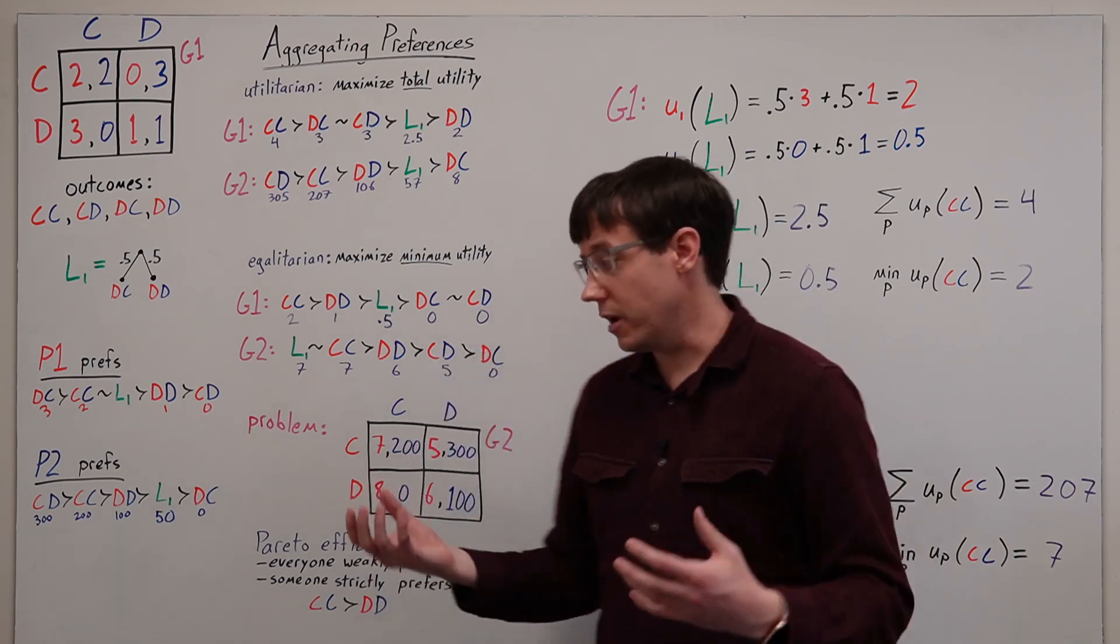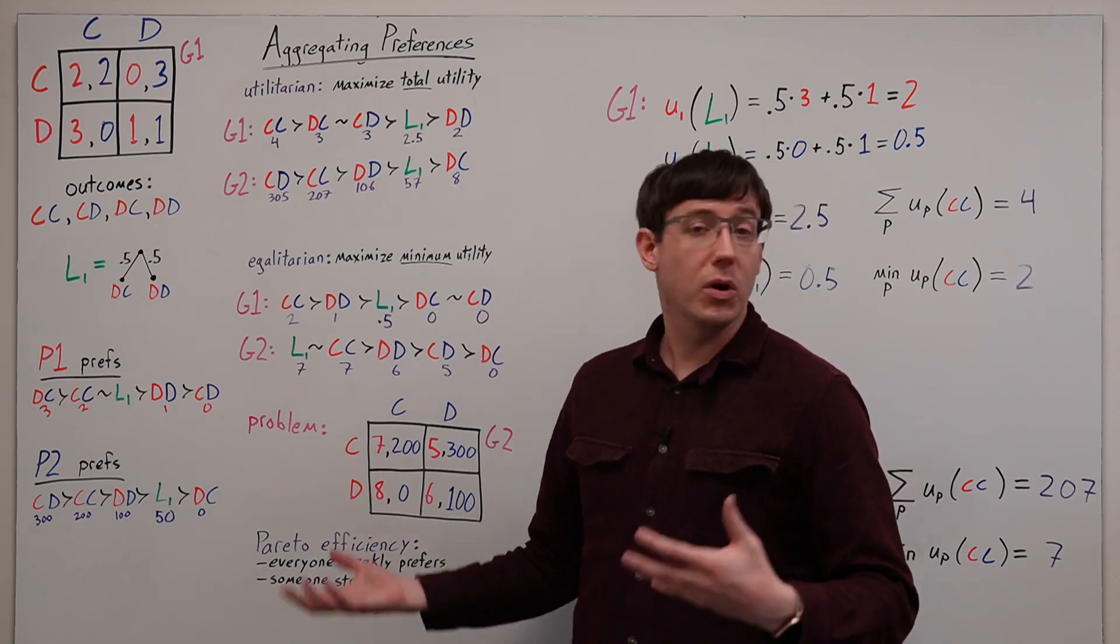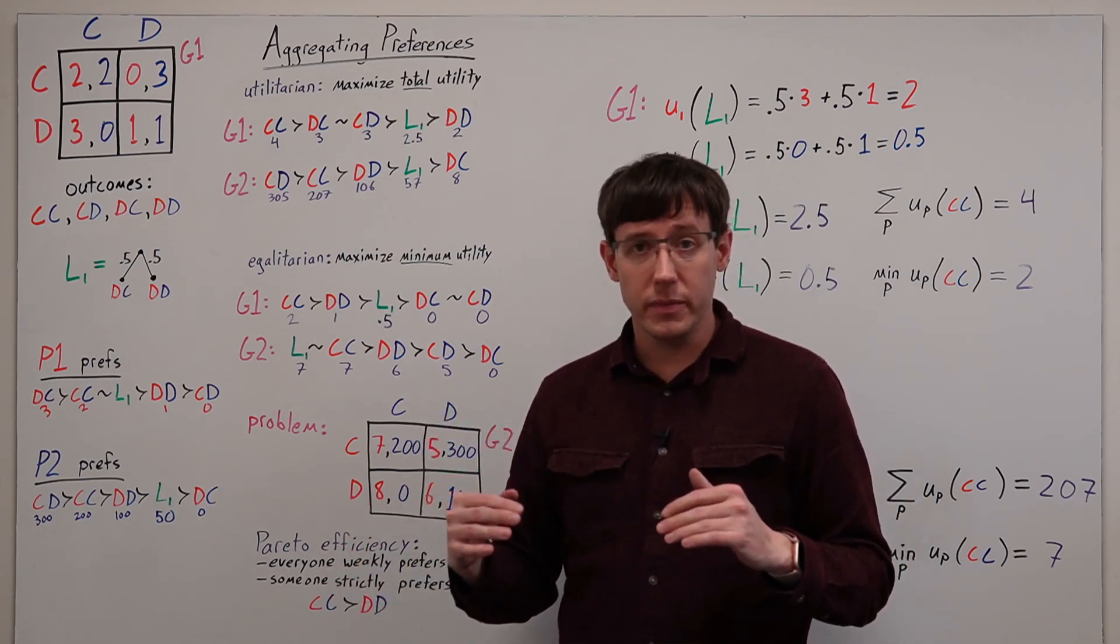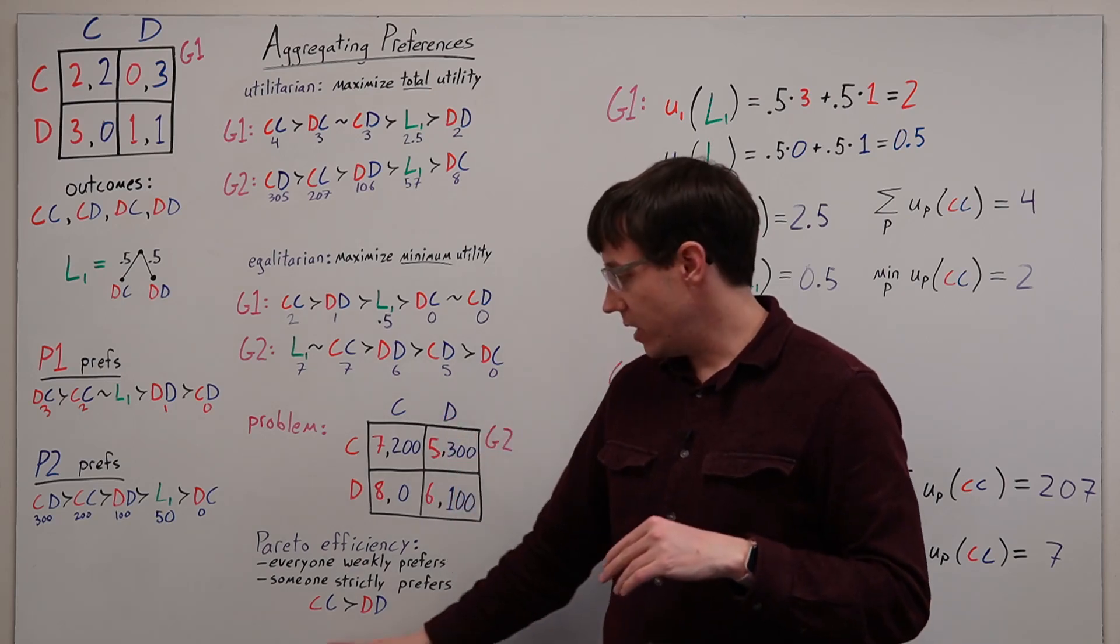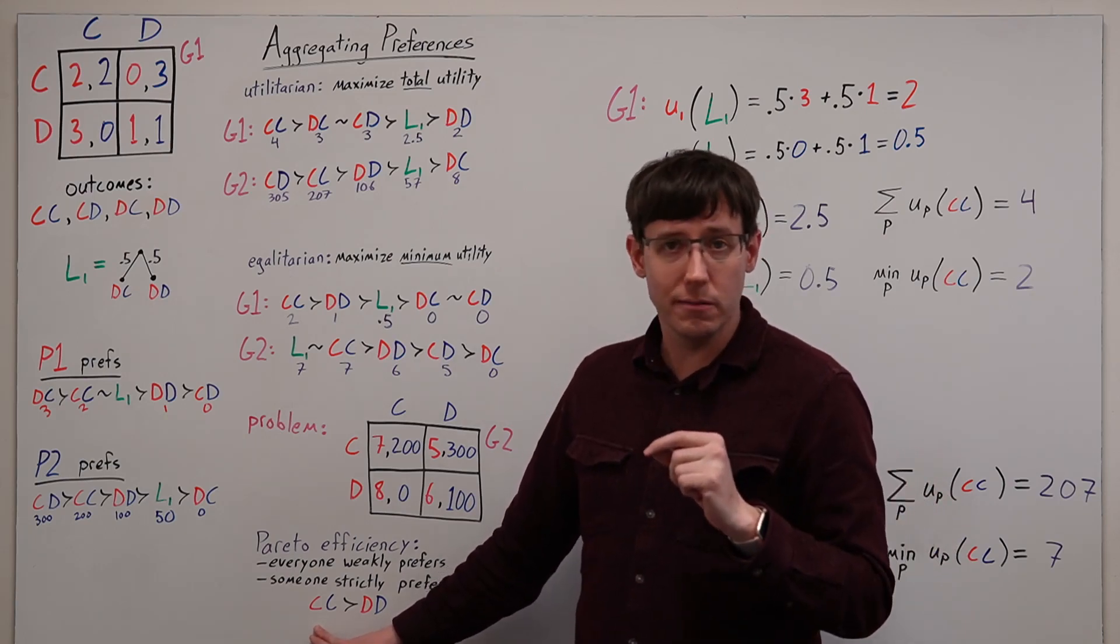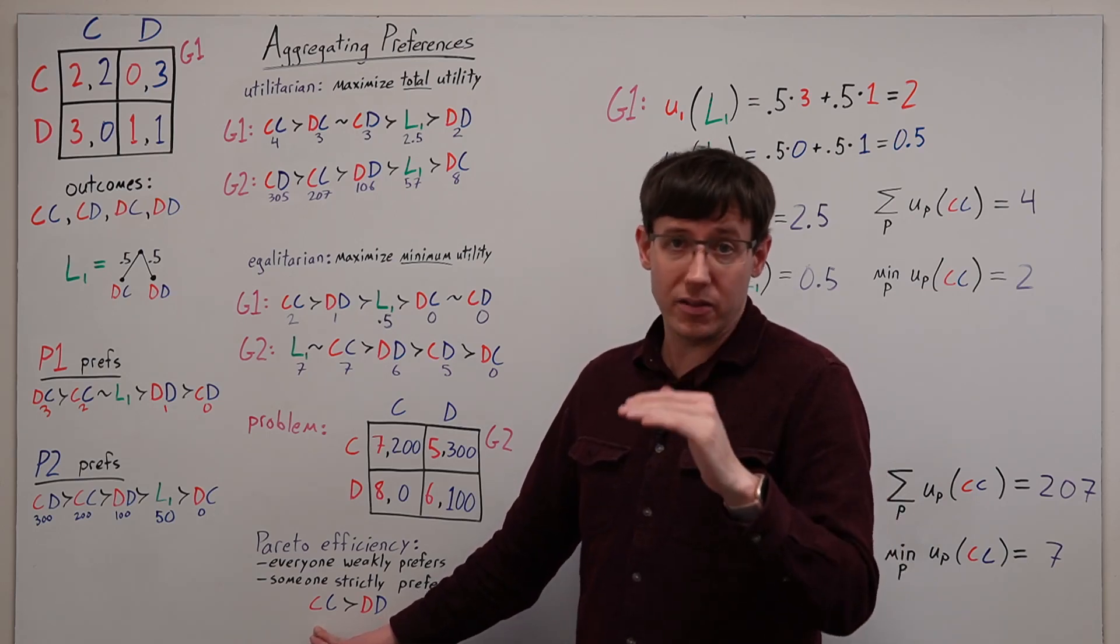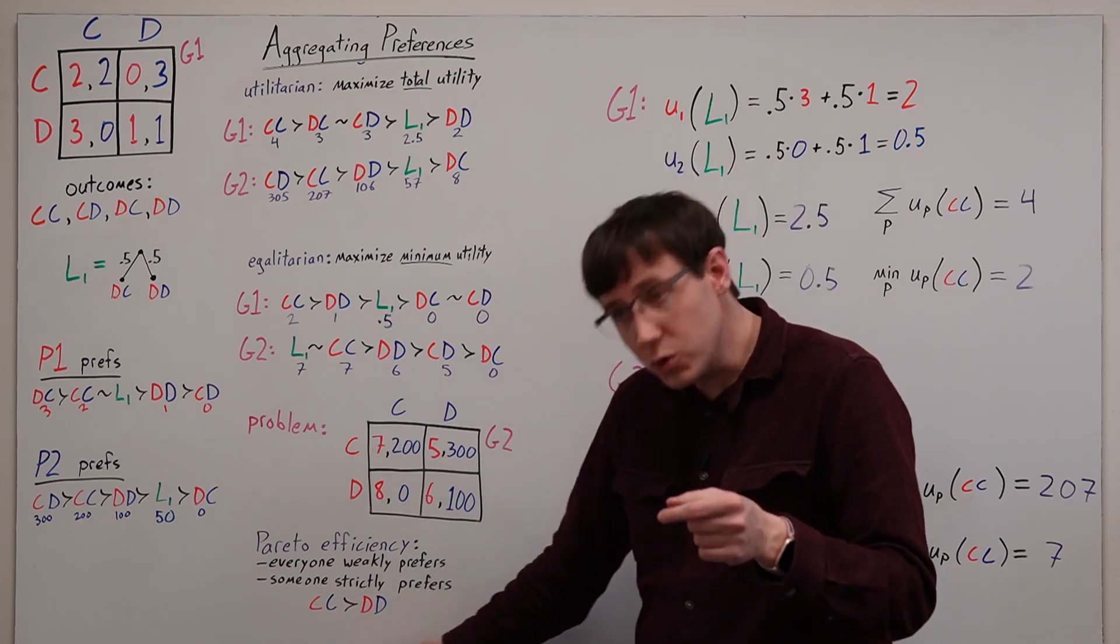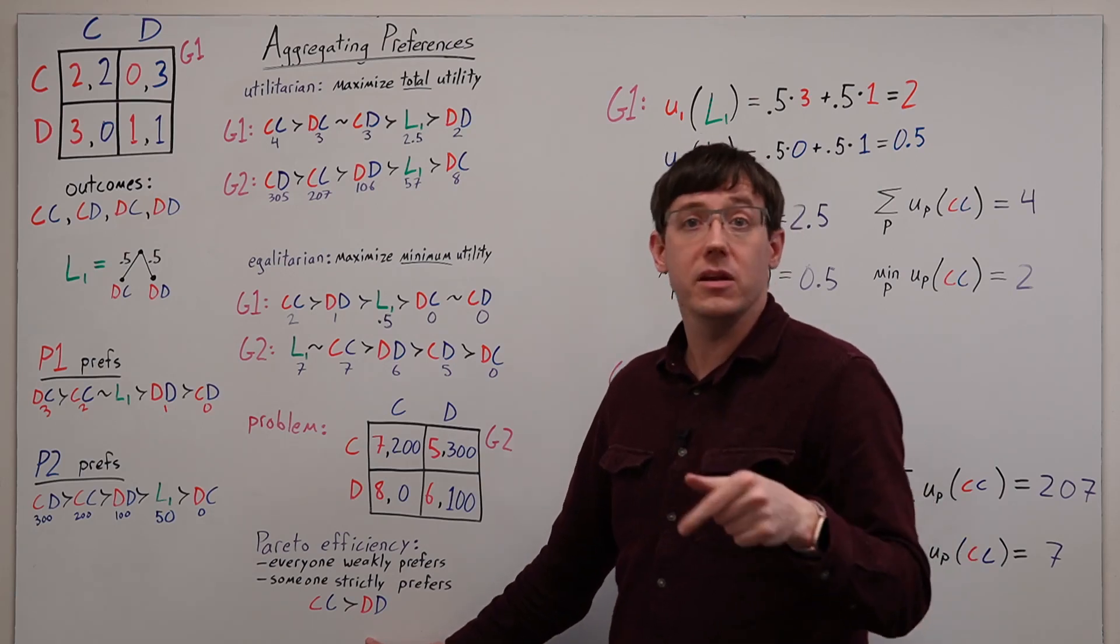And that leads us to the criterion of Pareto efficiency. If we're comparing two outcomes by the Pareto criterion, we can only say that one is better than the other if it is at least as good for everyone. That is, the better outcome cannot lower anyone's utility. Or another way to think of that, no one can object to picking that outcome because it's worse for them. And to say that the outcome is actually better, there needs to be at least one player for whom it is a strict improvement.